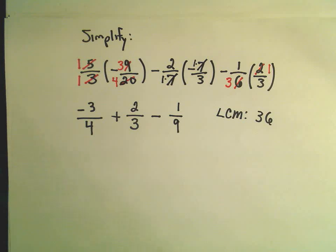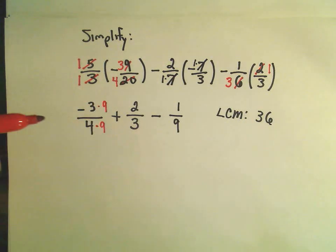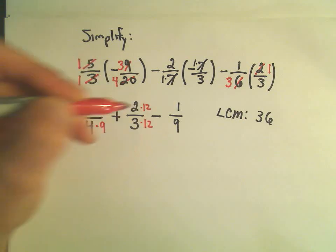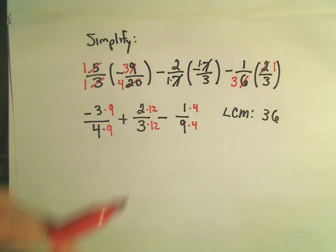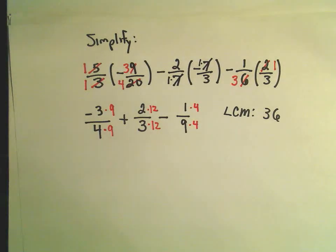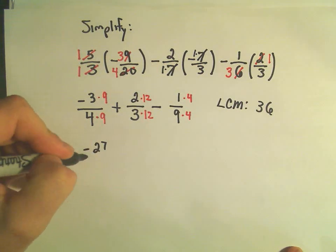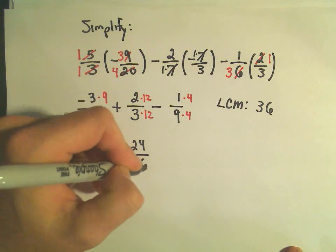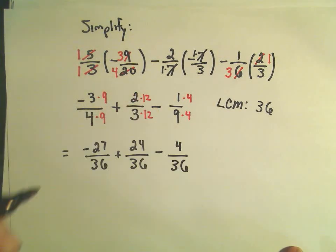So now to make a 36 appear in the denominator of the first fraction, we would have to multiply top and bottom by 9. To make a 36 appear in the second fraction, we would have to multiply top and bottom by 12. And then for our last fraction, we would have to multiply top and bottom by 4. So now we're getting pretty close. In the top, we have negative 27 over 36, plus 24 over 36, and then minus 4 over 36.